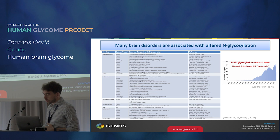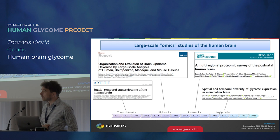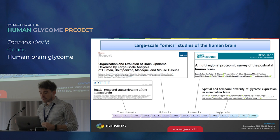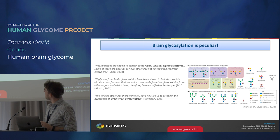As is the case in many fields, large-scale N-glycomic studies are still lagging behind the other modalities. It's only in the last couple of years that large-scale N-glycomic studies of the human brain have really taken off. So it's early days, but we have learned some things about brain N-glycosylation so far.